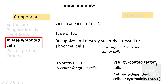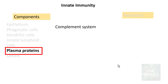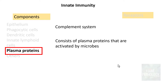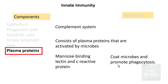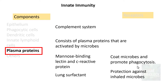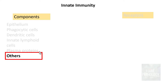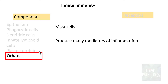Moving on to plasma proteins: the complement system consists of various plasma proteins activated by microbes. Mannose-binding lectin and C-reactive protein are acute-phase reactants that coat microbes and promote phagocytosis. Lung surfactant is an example that protects against inhaled microbes. Among the other cells, mast cells produce many mediators of inflammation, the most important being histamine.